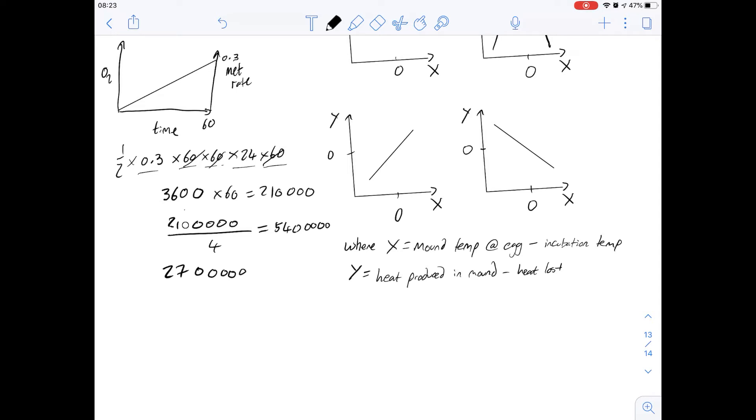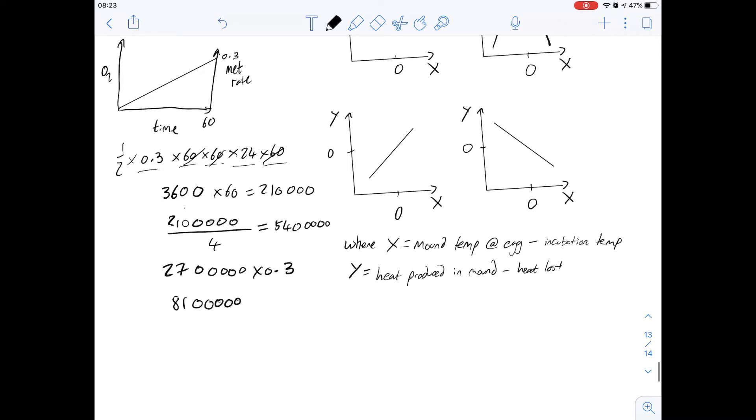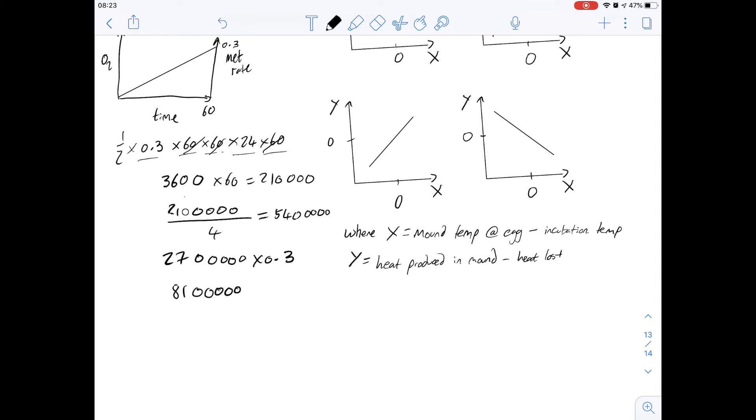Then we want to multiply that by 0.3 and a half, so let's multiply it by half first. So if we divide that by 2, then we want to multiply that by 0.3. So 27 times 3 is going to be 81. So it's going to give us 81,000. Okay, so if we look at our answers now.